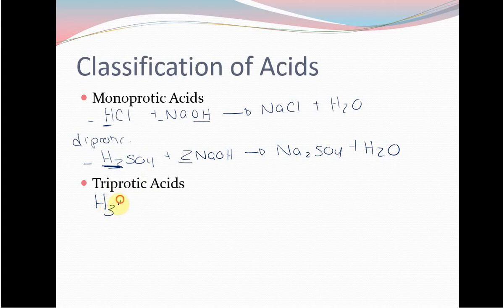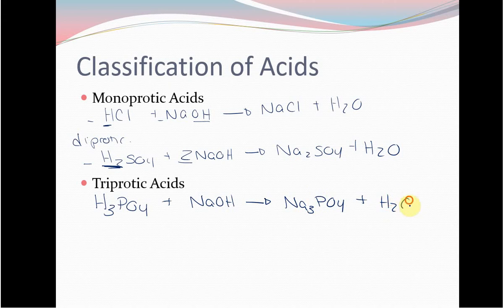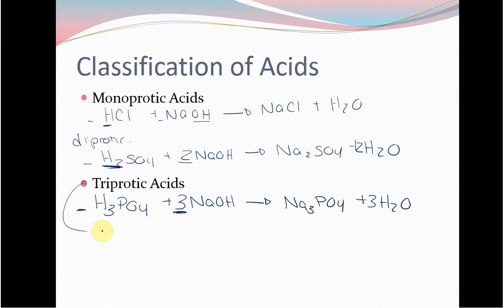An example of a triprotic acid from lecture would be phosphoric acid. If we had phosphoric acid reacting with NaOH, in order to balance this we would need a three in front of NaOH and a three here — three sodiums. So we have a one-to-three ratio. The other reason I bring this up is that citric acid also has three acidic protons that come off, so there should be a three-to-one ratio.